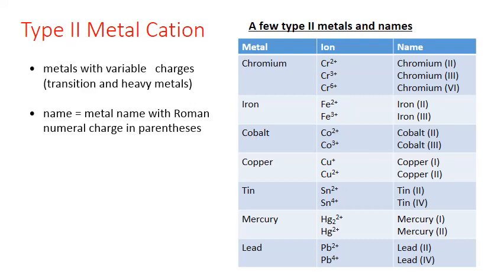The type 2 metals are usually the transition metals, but they also include a few heavy metals, particularly those from the bottom of columns 13 and 14. These metals don't have a predictable ion charge. For example, chromium, when it forms ions, can form ions with a 2+ charge, a 3+ charge, or a 6+ charge. To indicate which charge we're dealing with, we put that charge number as a Roman numeral in parentheses following the name of the metal. So chromium with a 6+ charge is known as chromium(VI).